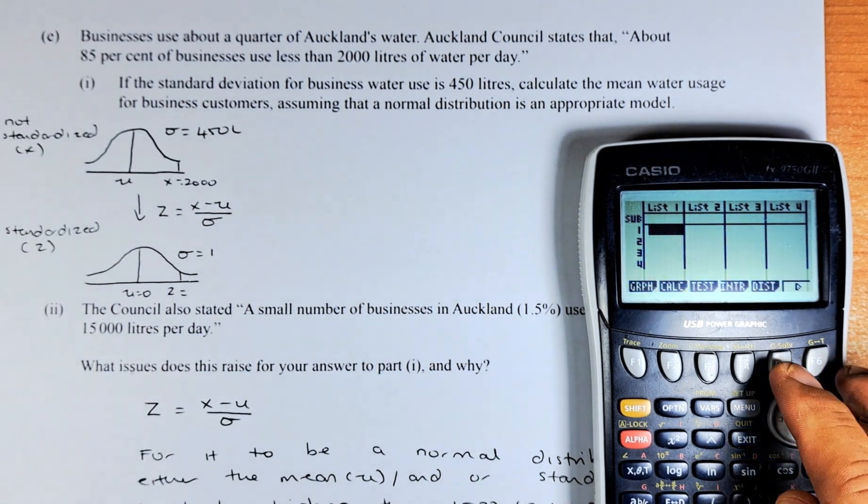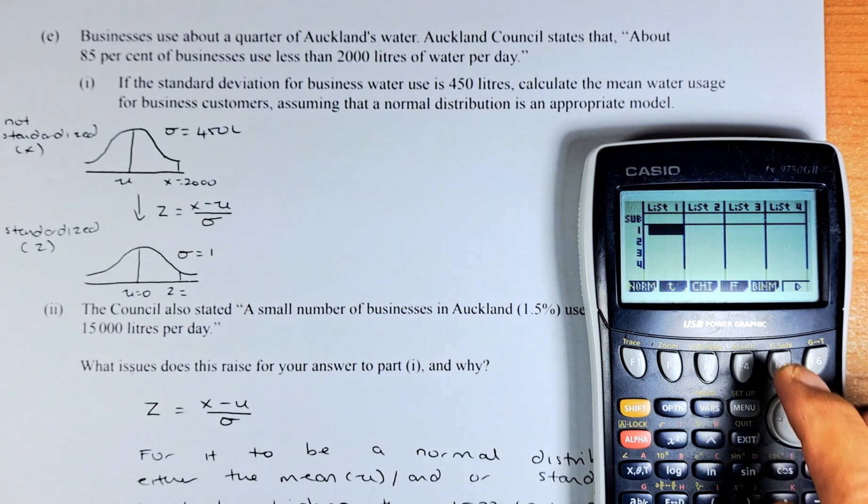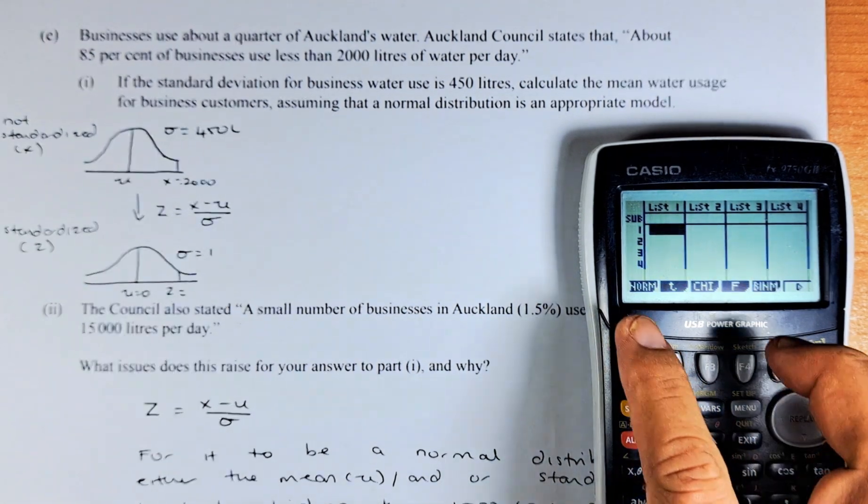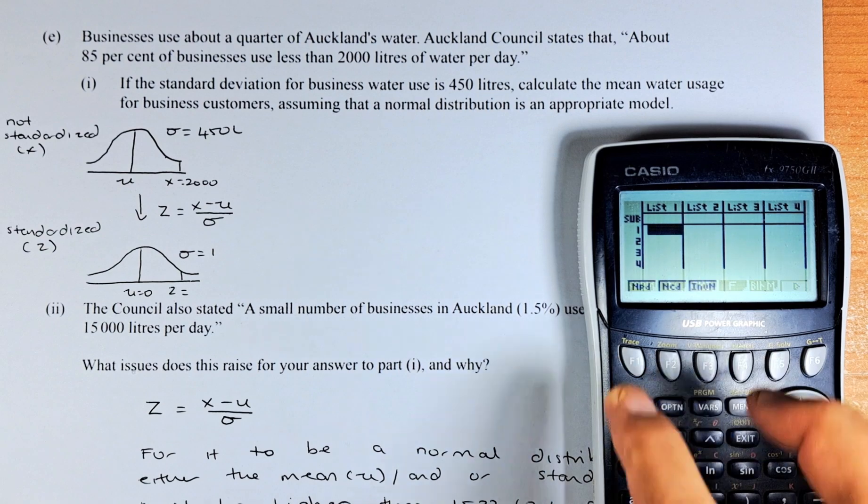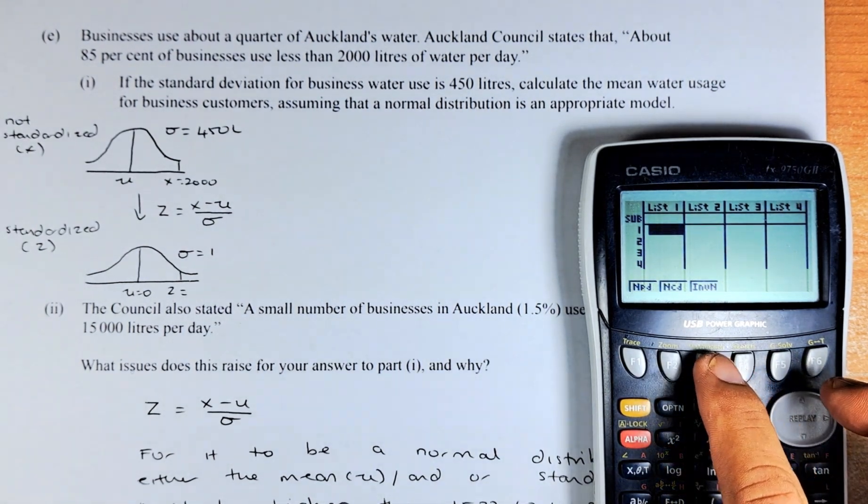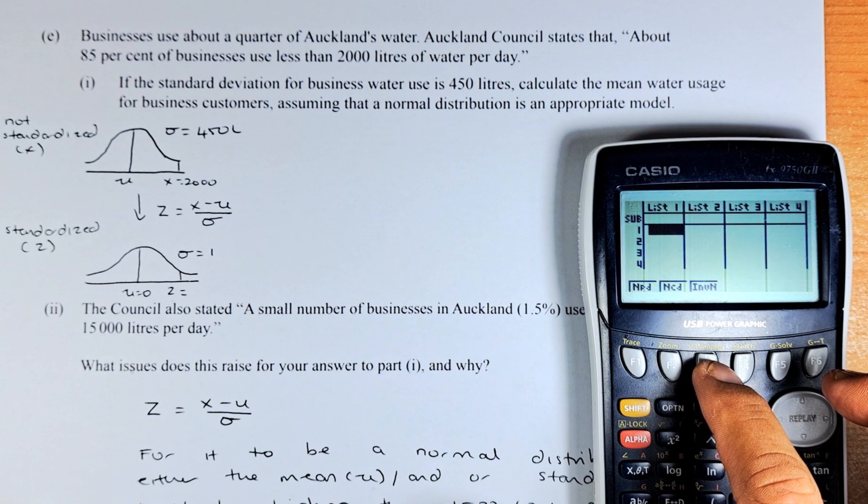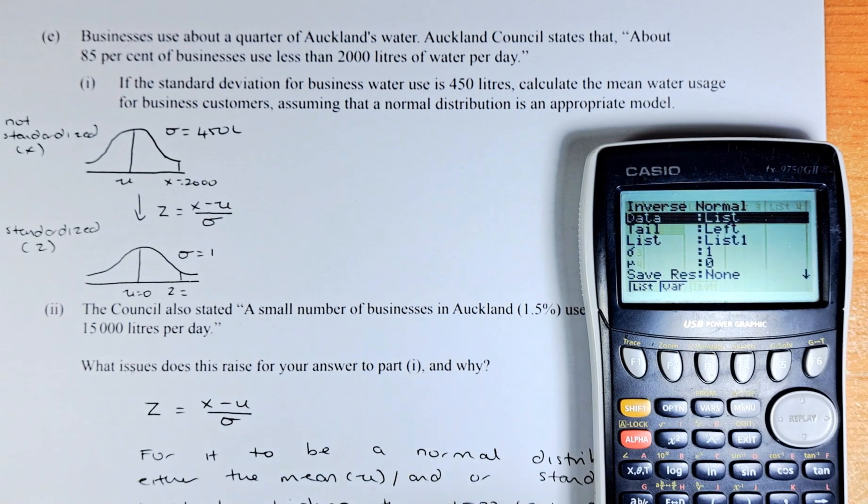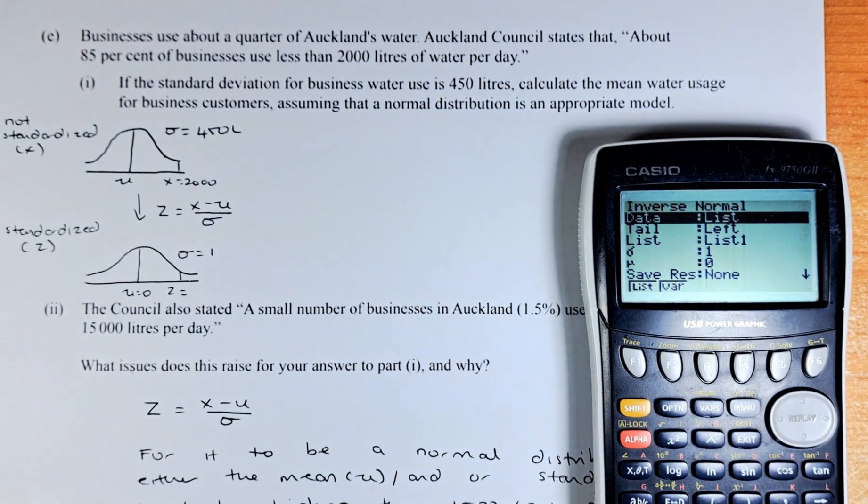We are going to go to distribution which is F5. And then we are going to normal distribution which is F1. We are going to do F3 which is inverse normal. This is an inverse normal distribution. So we are back to this screen again.